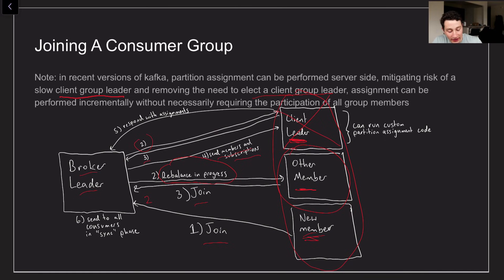So anyways once the client determines these values what it's going to do in step five is respond with the assignments back to the broker leader and then the broker leader is going to basically cache those so that it can send them to all consumers the next time that they all reach out to the broker leader. And instead of calling join next time they'll call this operation sync. So that makes it easy enough to get done.